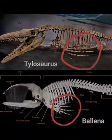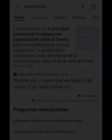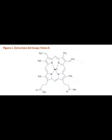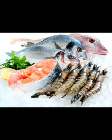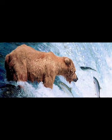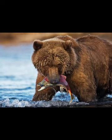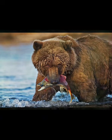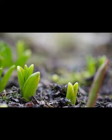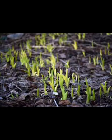Abordaremos finalmente las homoplasias moleculares. Estos casos son muy parecidos a las homoplasias y convergencias, pero a nivel molecular. Es probable que te llame la atención, pero seguramente has escuchado que el hierro se encuentra en diferentes alimentos. Por ejemplo, en la naturaleza se encuentra en el salmón. Cuando el oso se alimenta del salmón, digiere el hierro, y posteriormente, cuando va al bosque, lo excreta, y este hierro es absorbido por la tierra y sirve de abono.